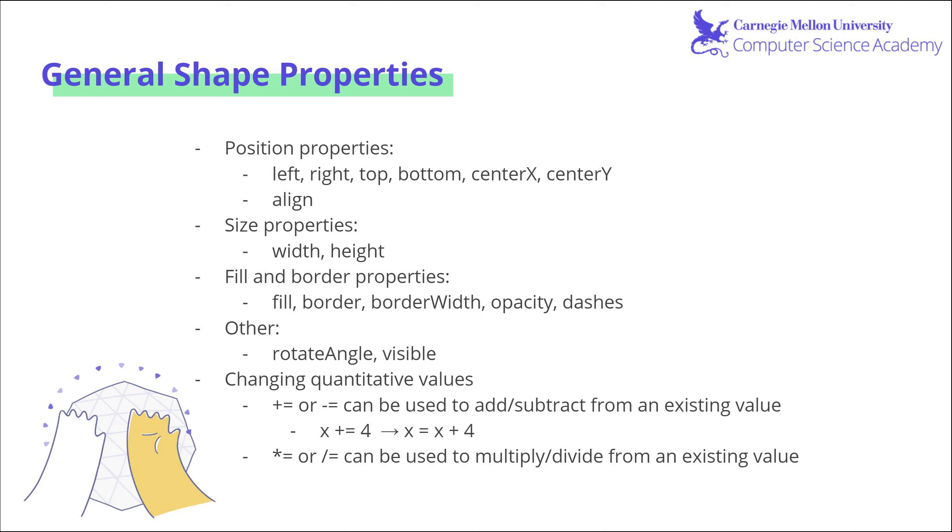There's, of course, the position properties, just left, right, top, bottom, centerX, centerY, and align. There's also size properties, such as width and height. You have the fill and border properties, as well as others that we haven't previously discussed, such as rotateAngle, which allows you to rotate the angle of the shape. As well as visibility, which can be set to true or false, where true means it is visible on the canvas and false means it is not visible on the canvas.